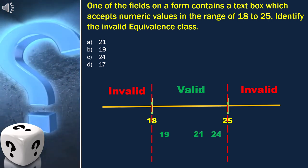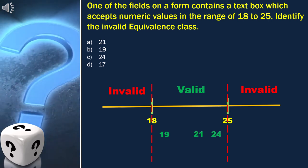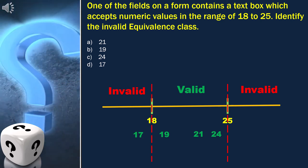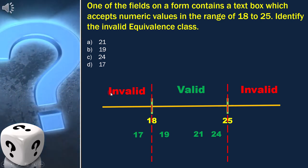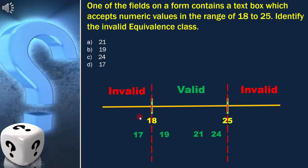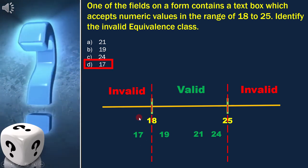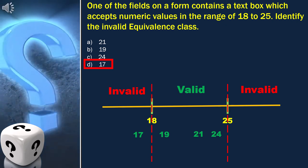Last option is 17, and we can place it here, and it is an invalid value. So option 4, which is 17, is the correct answer.